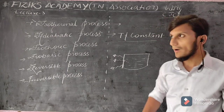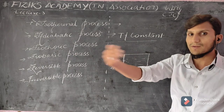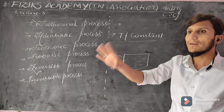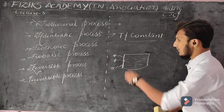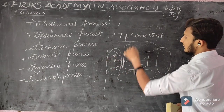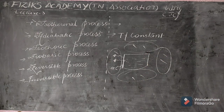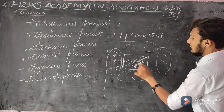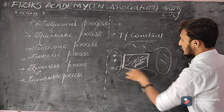Remember: in the isothermal process there is contact between system and surrounding, whereas in the adiabatic process there is no contact between system and surrounding. Everything other than the system comes under the surrounding. The particular area or region under study or consideration is called the system.